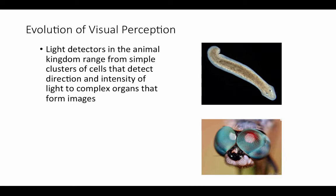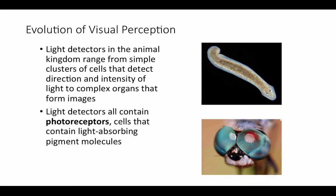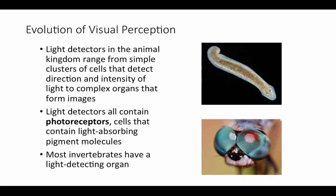Light detectors in the animal kingdom range from very simple clusters of cells that detect the direction and intensity of light — these are not going to form any kind of image but will detect if light is present or absent — to very acute eyes, such as the compound eyes of a dragonfly, that form very distinct images. Light detectors all contain photoreceptors: cells that contain light-absorbing pigment molecules, very similar to the pigments used by plants to absorb light. Most invertebrates have some kind of light-detecting organ.